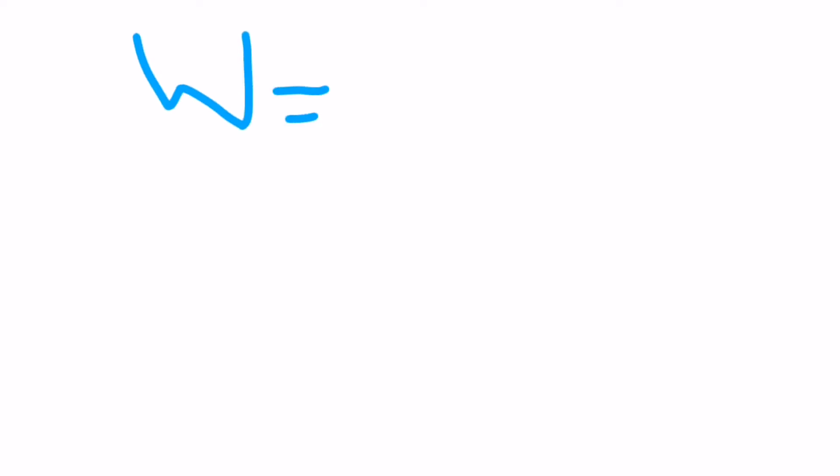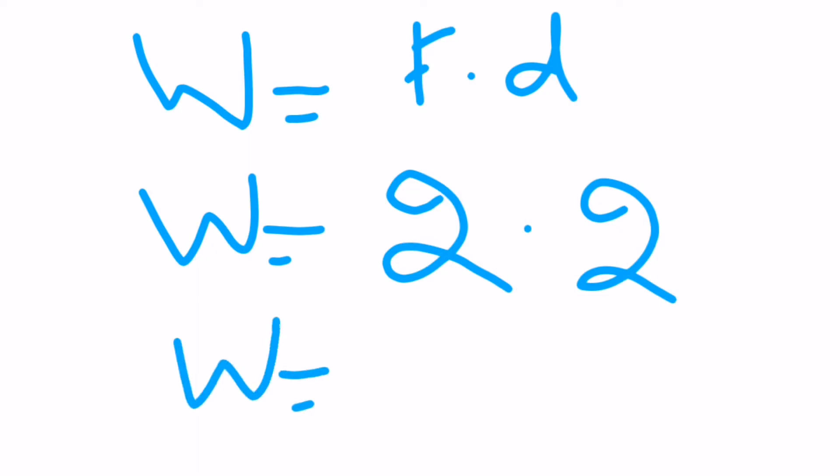The formula of work done is W = F · d. Now if force is doubled and displacement is doubled, and we multiply both, we get the answer is four. So the answer to that question is option C, four times.